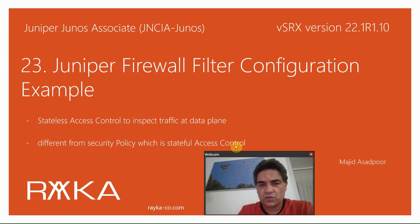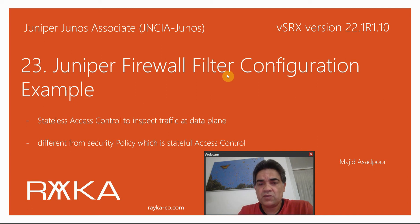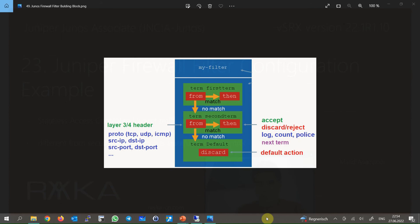In firewall filters, every packet must be inspected individually to determine whether it is permitted to be transmitted or must be filtered. As explained in the introduction, Juniper firewall filter allows us to control traffic at Layer 3 and Layer 4, where packets are permitted or filtered as they enter or exit an interface.